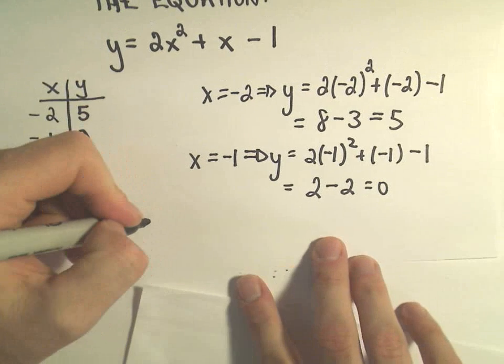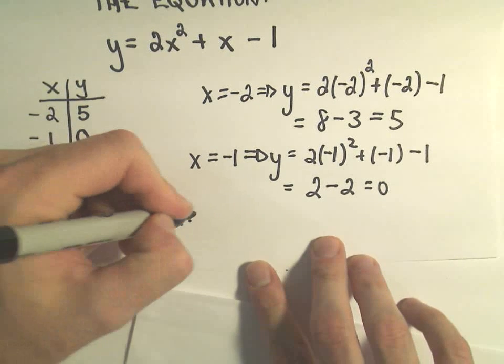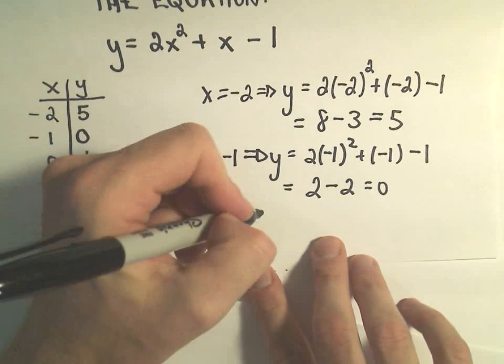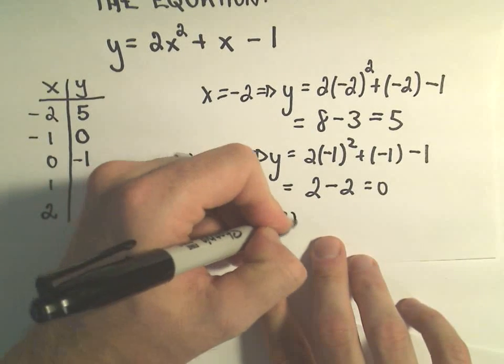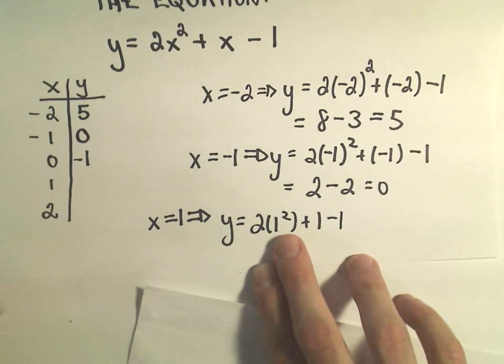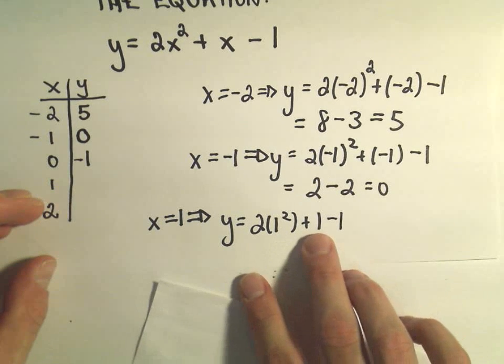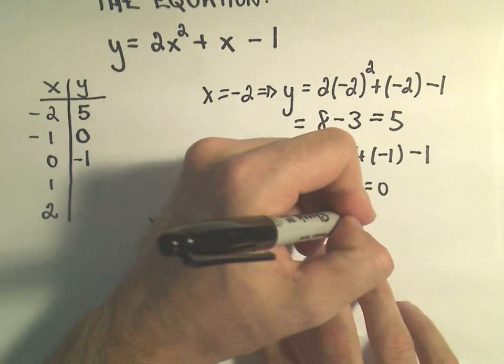If we plug in x equals positive 1, we'll simply get that y equals 2 times 1 squared plus 1 minus 1. 1 squared is 1, so 1 times 2 is 2 plus 1 is 3 minus 1, it's going to give us a 2.